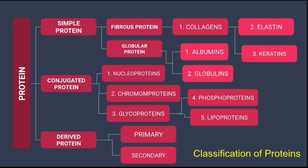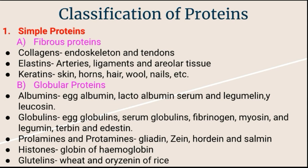Next is conjugated protein. According to the nature of the prosthetic group, conjugated proteins are classified into: nucleoprotein, chromoprotein, glycoprotein, phosphoprotein, and lipoprotein. The classification depends entirely on the nature of the prosthetic group. The third type is derived protein, which is divided into two types: primary derived proteins and secondary derived proteins. This completes the classification diagram of proteins.